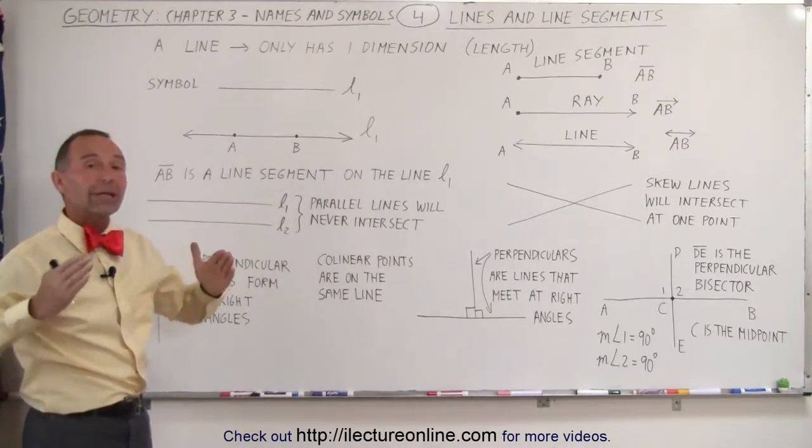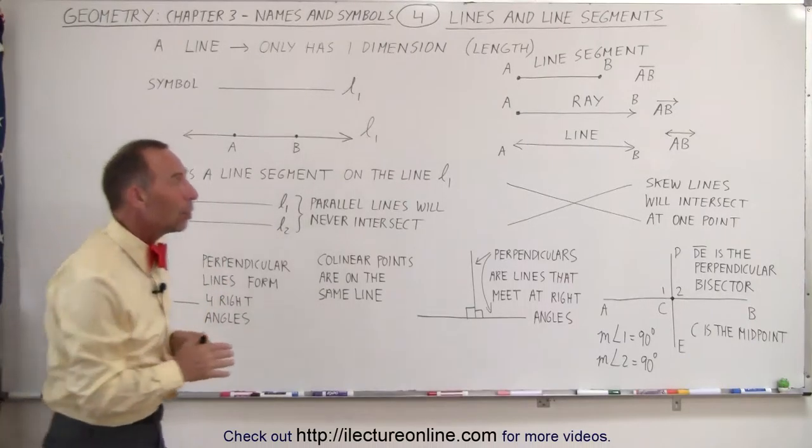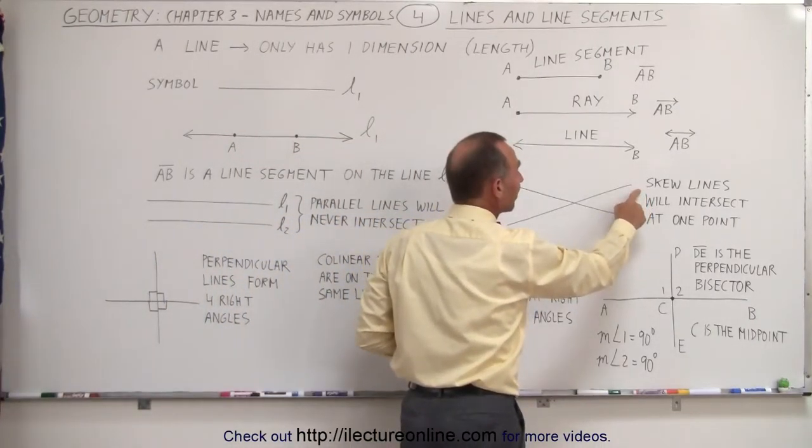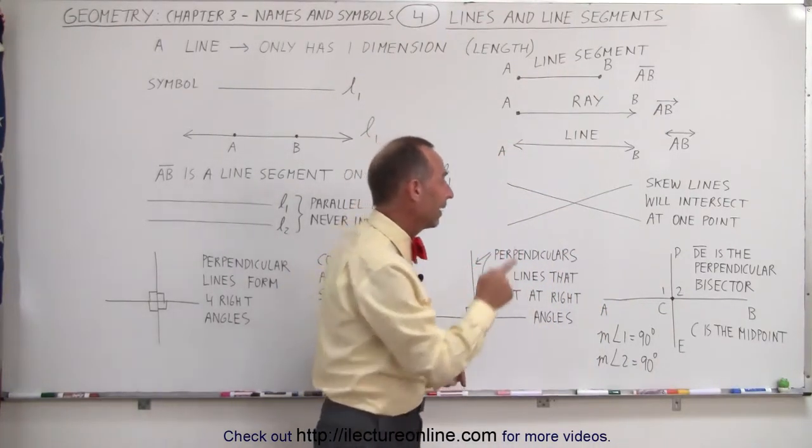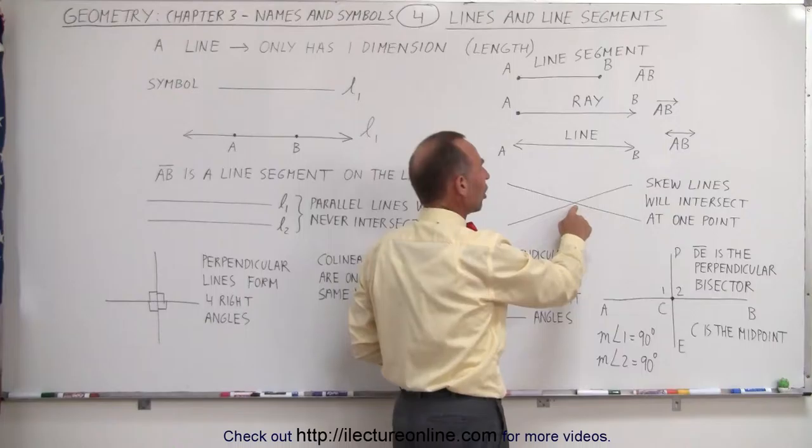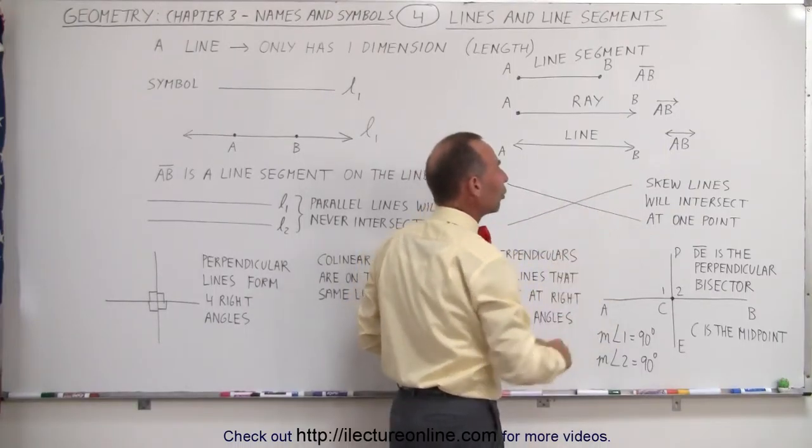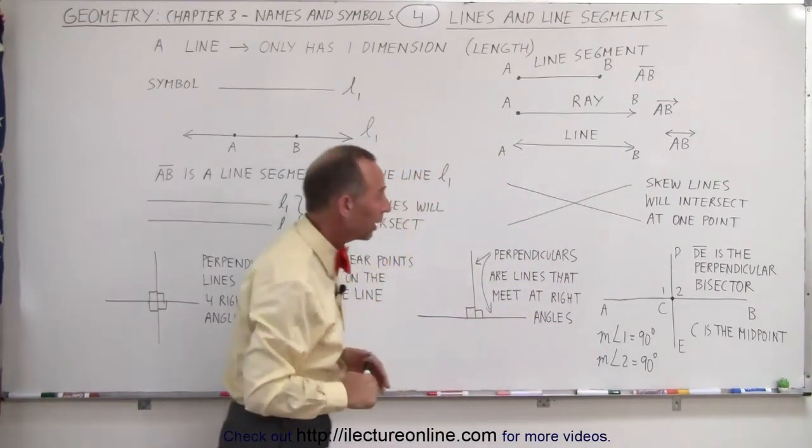If the lines are oriented differently, then we call them skew lines, and if that's the case, at some point somewhere on the plane, they will intersect at that particular point. This is called the point of intersection, and these two lines are now skew lines. They're no longer parallel.